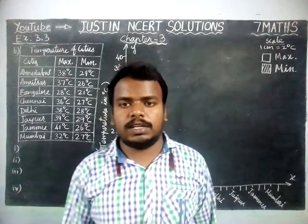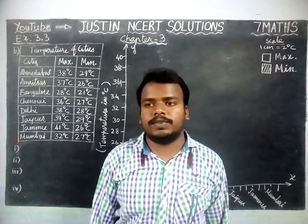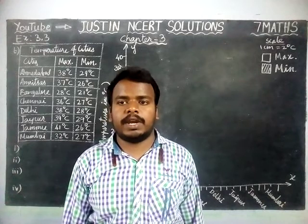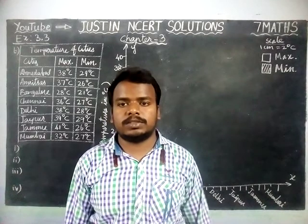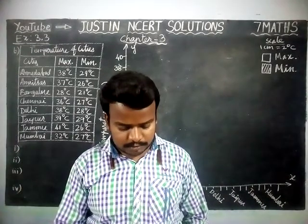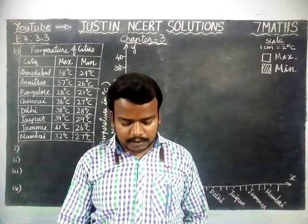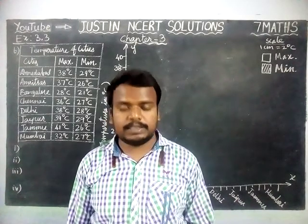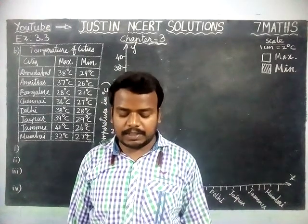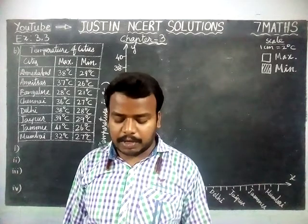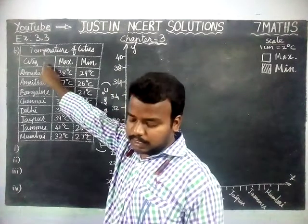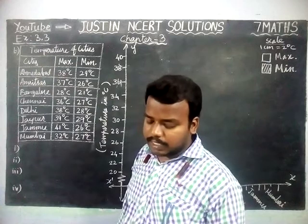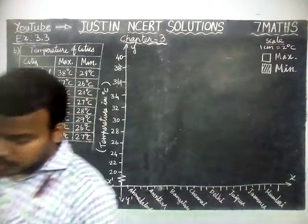Hi students, welcome to Justine NCIT Solutions. In this video we are going to see 700 Maths Chapter 3 Exercise 3.3, 6th Question. The question is: take the data given the minimum and maximum temperature of various cities given in the beginning of this chapter, Table 3.1. Plot a double bar graph using the data and answer the following questions.